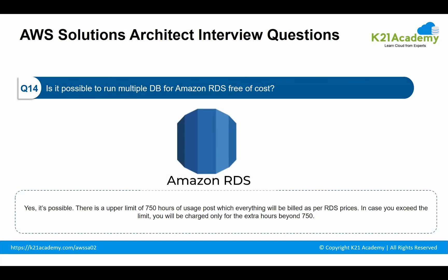The next question: is it possible to run multiple databases on Amazon RDS free of cost? Yes, it is possible. There is an upper limit of 750 hours of usage, after which everything will be billed as per RDS prices. In case you exceed the limit, you will be charged only for the extra hours beyond 750.